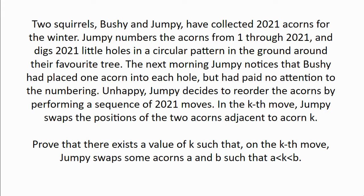Unhappy, Jumpy decides to reorder the acorns by performing a sequence of 2021 moves. In the kth move, Jumpy swaps the positions of the two acorns adjacent to acorn k. Prove that there exists a value of k such that on the kth move, Jumpy swaps some acorns a and b, such that a is less than k is less than b.